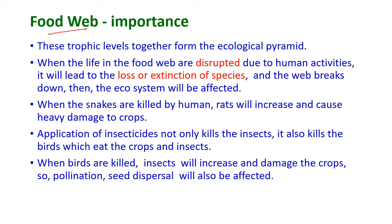The importance of the food web: these trophic levels together form the ecological pyramid. When life in the food web is disturbed or disrupted due to human activities, it will lead to the loss or extinction of species.